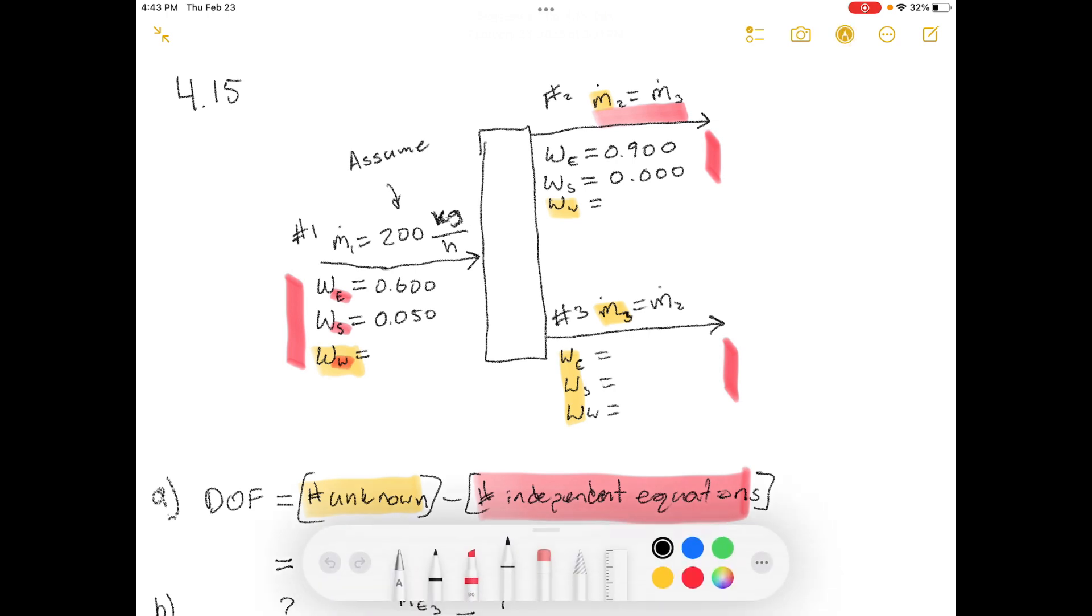Okay, so I'll read the problem statement. A liquid mixture contains 60 weight percent ethanol, 5 weight percent of a dissolved solute S, and the balanced water. A stream of this mixture is fed into a continuous distillation column operating at steady state. Product streams emerge at the top and bottom of the column. The column design calls for the product streams to have equal mass flow rates, and for the top stream to contain 90 weight percent ethanol and no solute. Part A: assume a basis of calculation, draw and fully label a process flow chart, do the degree of freedom analysis, and verify that all unknown stream flows and compositions can be calculated. Don't do any calculations yet.